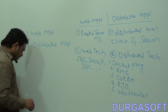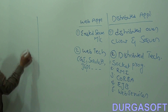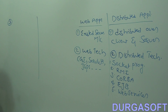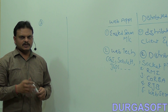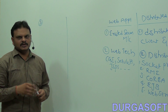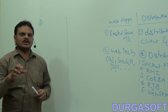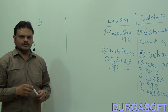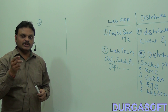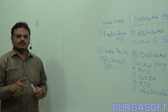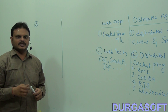Another difference involves the types of servers. In general, there are two types of servers: web servers and application servers. Web servers are able to execute only web applications, but application servers are able to execute both web applications and distributed applications.